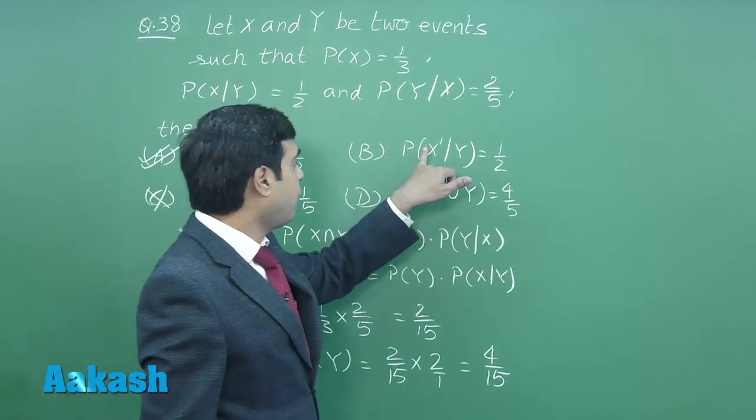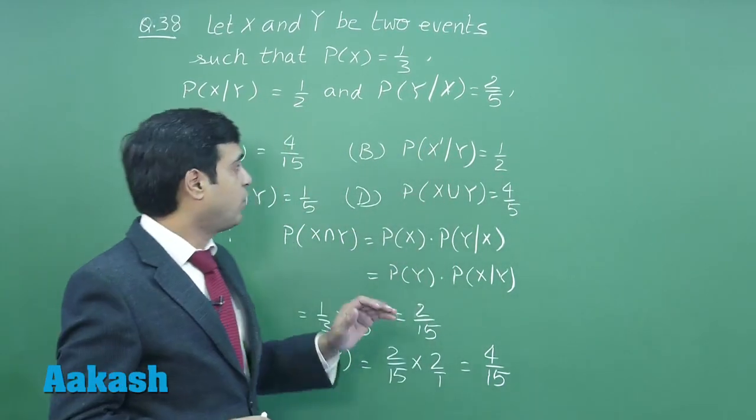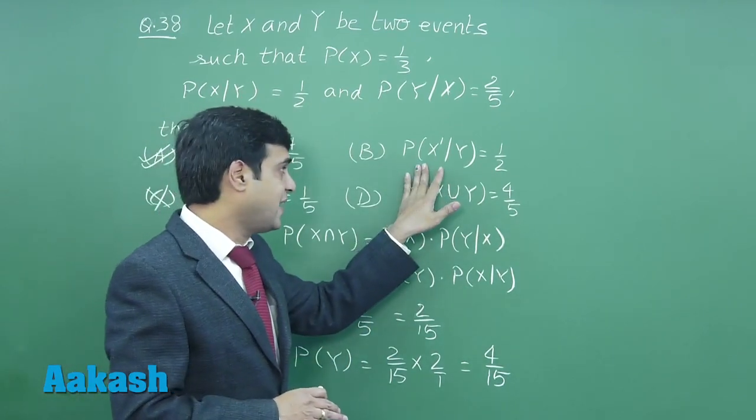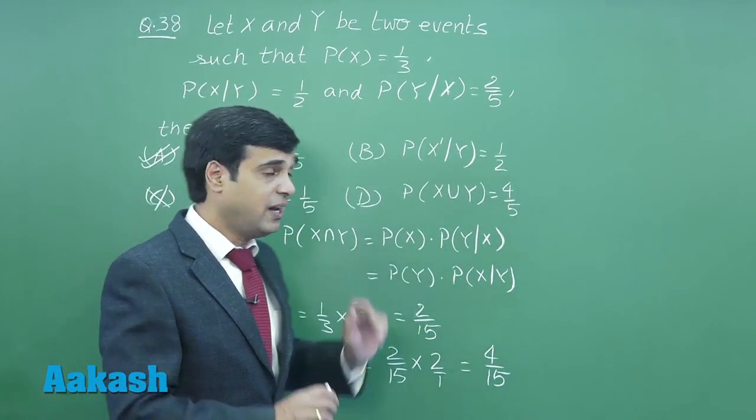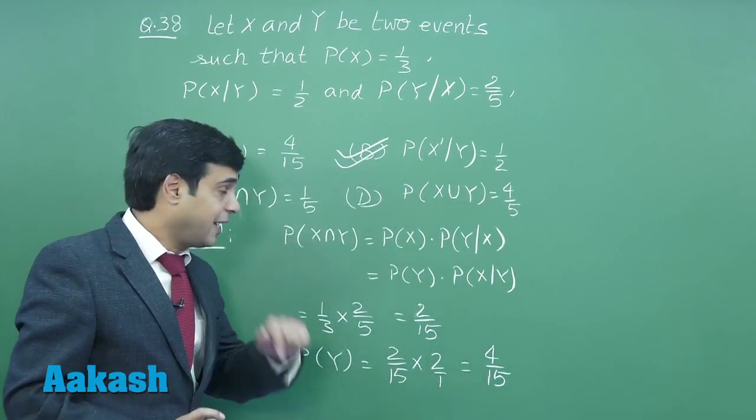Next, probability of X complement given that Y has already occurred. We know that probability of X while Y has occurred plus probability of X complement while Y has occurred equals 1, giving me this option is correct.